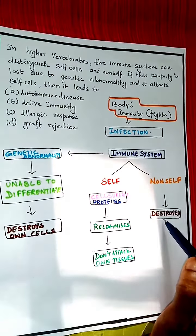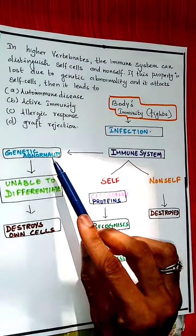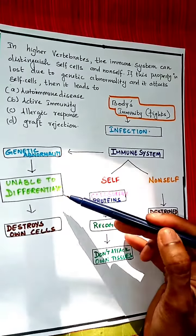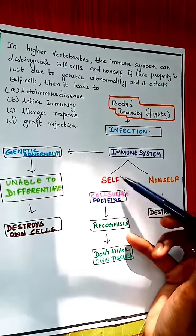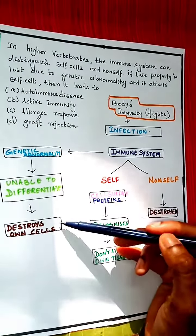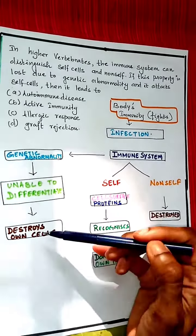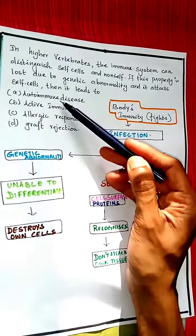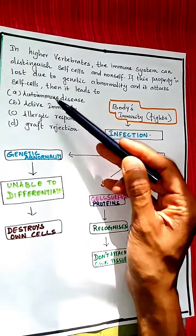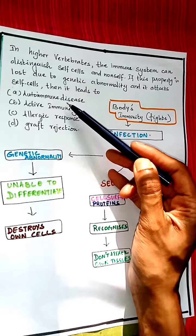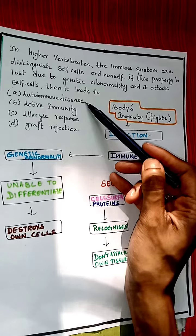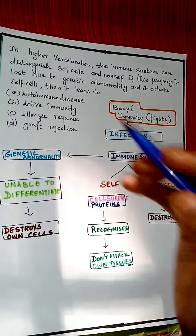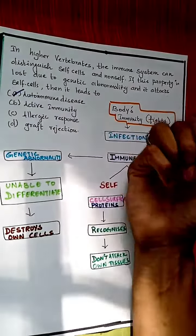When the immune system has a genetic abnormality, the ability to differentiate self and non-self is lost. When it is unable to distinguish between these two, it destroys its own cells — that is, the immune system will destroy the body's own tissues. This self-destruction of the body's own cells is called autoimmune disease. An example of autoimmune disease is rheumatoid arthritis. So the correct answer is autoimmune disease.